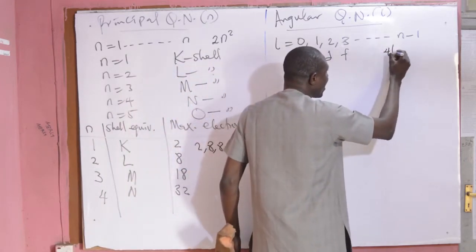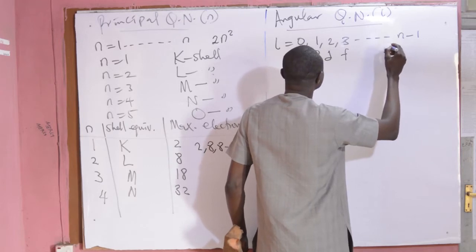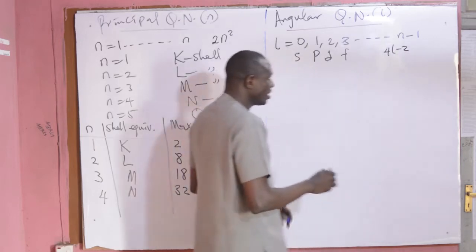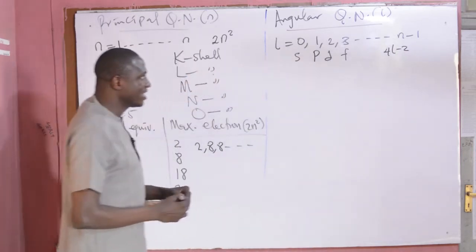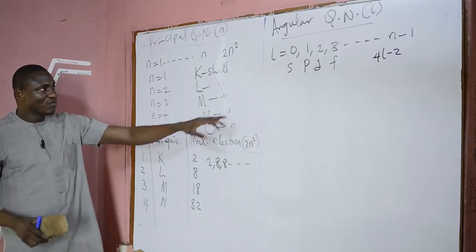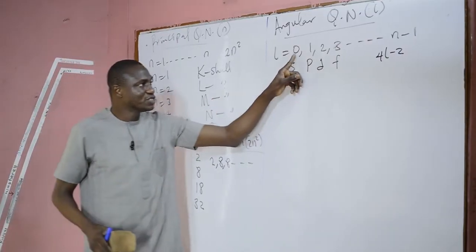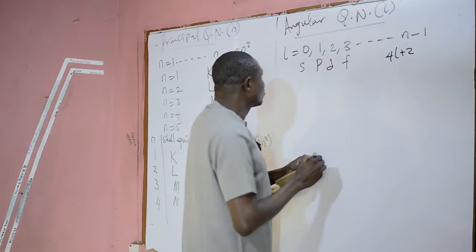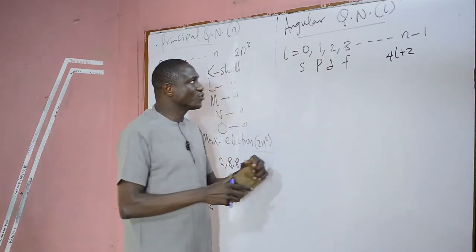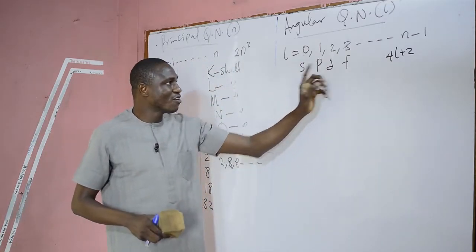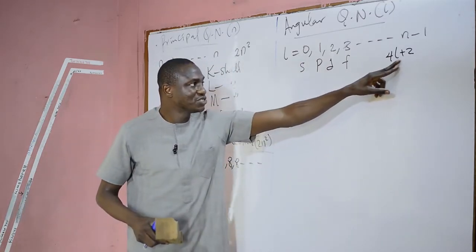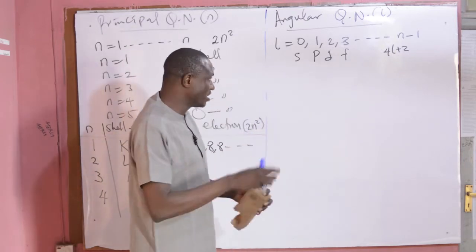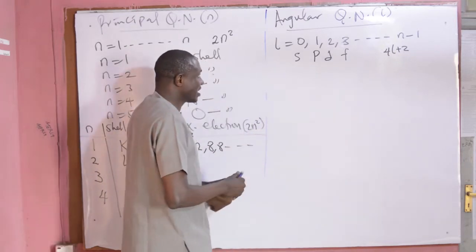The maximum number of electrons that can occupy each sub-shell is equal to 4L plus 2. When L is equal to 0, you have 4×0+2=2, so that sub-shell takes a maximum of 2 electrons. Now let us combine the angular quantum number and the principal quantum number and see how they are related in a table.